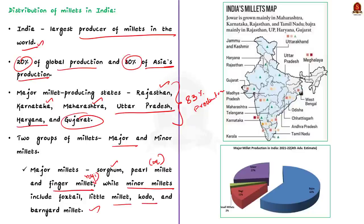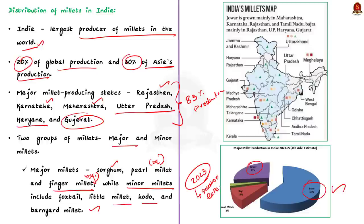This graph shows that bajra is the most cultivated millet in India, and the second most cultivated millet is jowar. As you all know, 2023 has been declared as the International Year of Millets by the Food and Agriculture Organization. So we can expect a question about millets in the upcoming prelims examination.